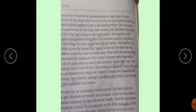But with the surrounding gloom and murkiness of the water, murkiness means strange, it became quite impossible to see the poles under us and it was necessary to feel one's way very carefully over it with the feet. There being no handrail of any sort and the underwater poles being very slippery, it made for a horrendous crossing. Horrendous means terrible. How Dorothy managed goodness only knows, for she had to take a petrified Leval across.